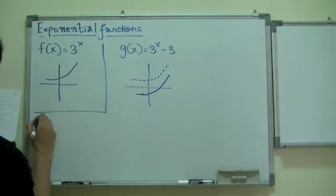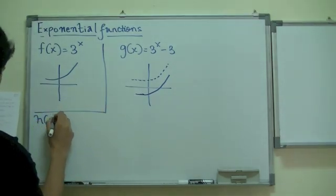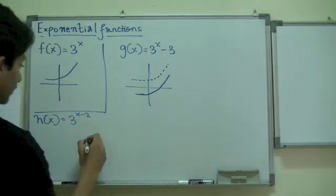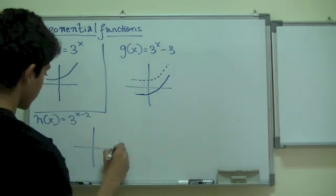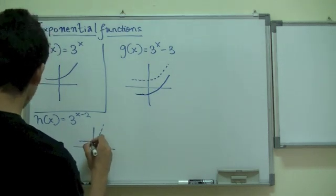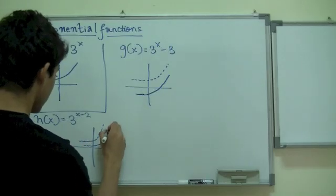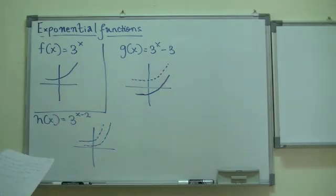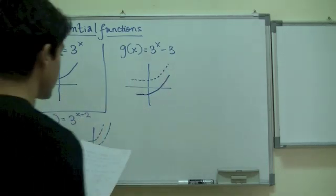Now, you have h(x), 3^(x minus 2) on the exponent. Basically means, if the first graph was here, now it's moved over here. Two units over to the right because this is horizontal translation.